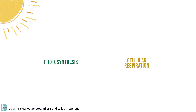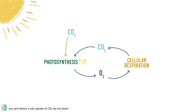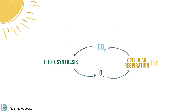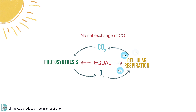In the presence of light, a plant carries out photosynthesis and cellular respiration. Carbon dioxide is used in photosynthesis, but it is released in cellular respiration. If the rate of photosynthesis is higher than the rate of respiration, you will detect a net uptake of carbon dioxide by the plant. If it is the opposite, they release carbon dioxide into the surrounding. But when you have an equal rate of the two processes, there would not be a net exchange of carbon dioxide — all the carbon dioxide produced in cellular respiration is used in photosynthesis.